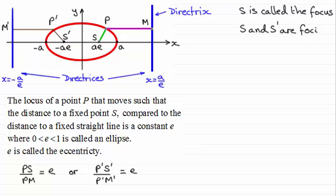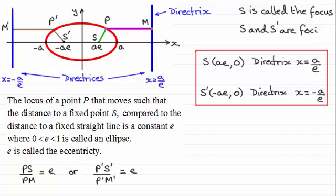So in summary, we have the focus S with coordinates (ae, 0) and the associated directrix x equals a over e, whilst the focus S dash has coordinates (-ae, 0) and directrix with equation x equals minus a over e.